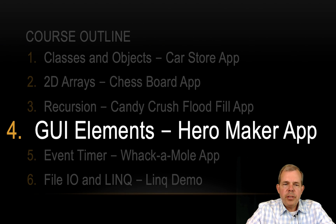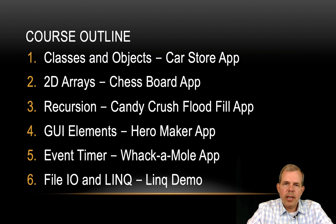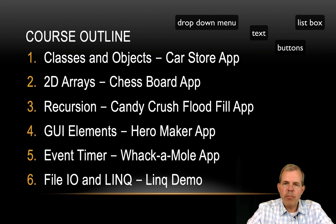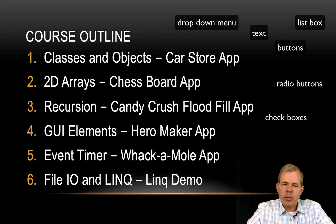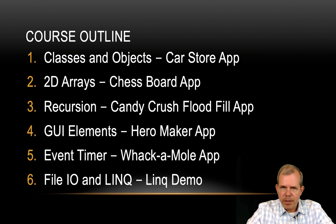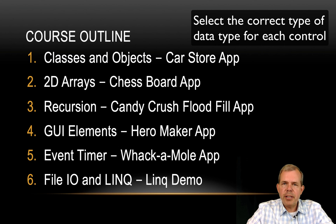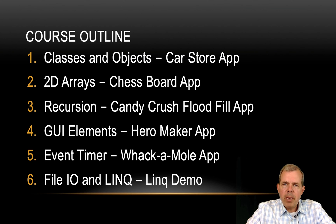In the fourth section, we're going to do an app called the Hero Maker. The point of this is that you can have many different controls on a form, such as buttons, text views, lists, drop-down menus, radio buttons, checkboxes, and lots of things. This app will also show you how to save the data from those items, put them into a class, and then into a text file, demonstrating many basic ideas used in all kinds of applications.